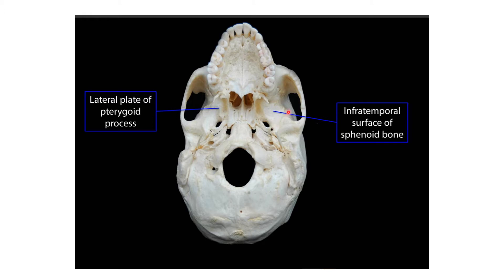The greater wing of the sphenoid is pierced by two foramina: the foramen ovale and, just behind that, the foramen spinosum.